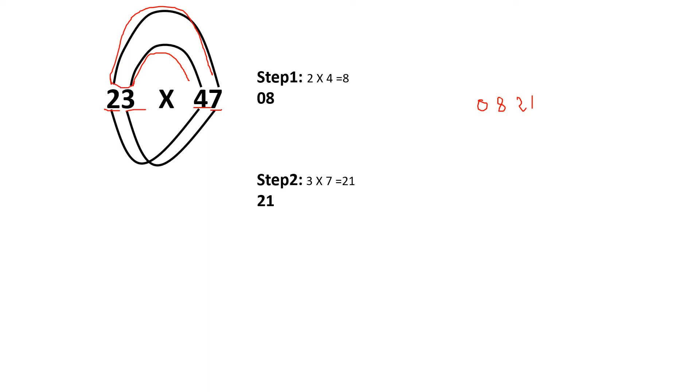And as I am using this pattern, this is my umbrella method. I call this as an umbrella method as well. So once again, focus on step 3. 2 is multiplied with 7. That's 14. And 3 is multiplied with 4. That's 12. And they are added.